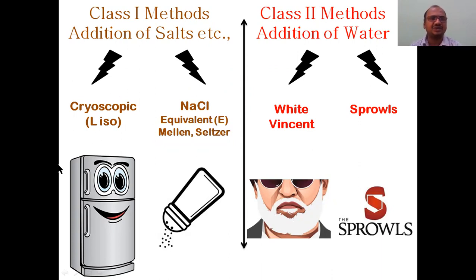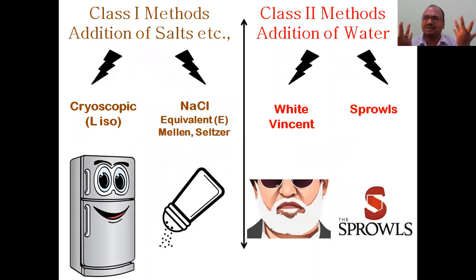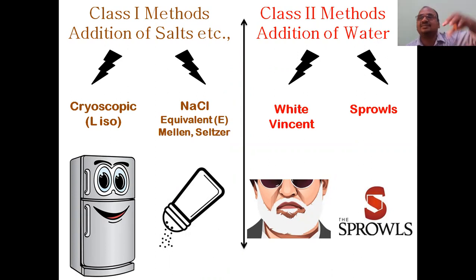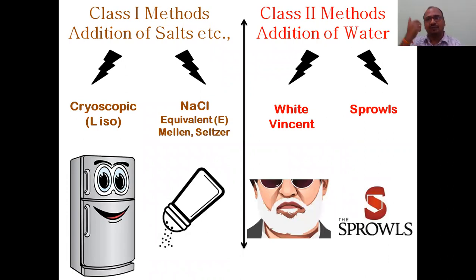Now the cryoscopic method — here is what you have to write in the exam when they ask a direct question. Point one: cryoscopic method is used to adjust the isotonicity of the given formulation. Point two: it comes under class one methods. Point three: in this method we are adding salt to adjust isotonicity. Point four: cryoscopic method is also called the L-iso method.